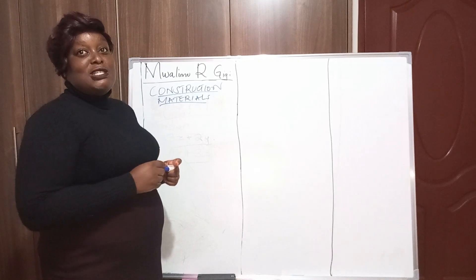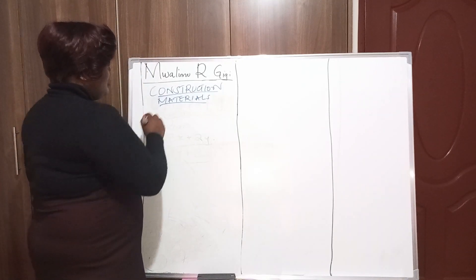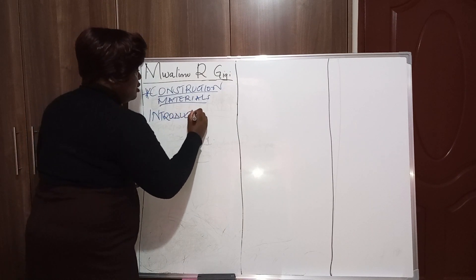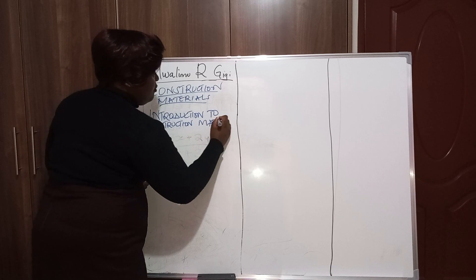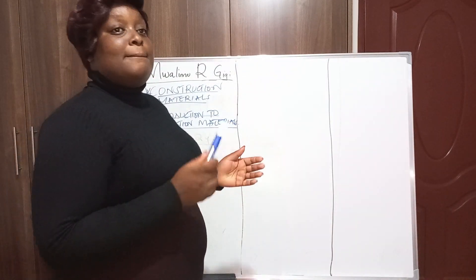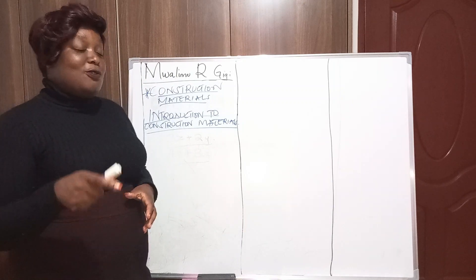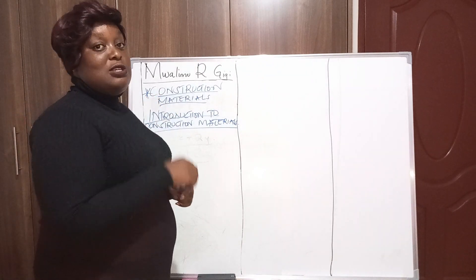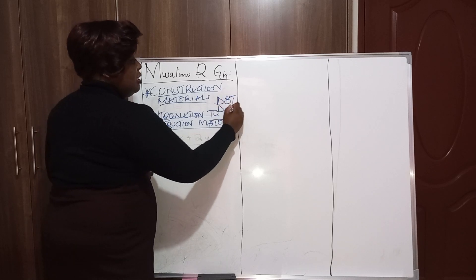This is courtesy of students from Bushangala Technical Training Institute. The first topic in the unit construction material is introduction to construction materials. If you have seen some of my videos, we have the course outline of construction material — go and check my last videos. This is diploma module 1, DBT 1 or DCE 1.